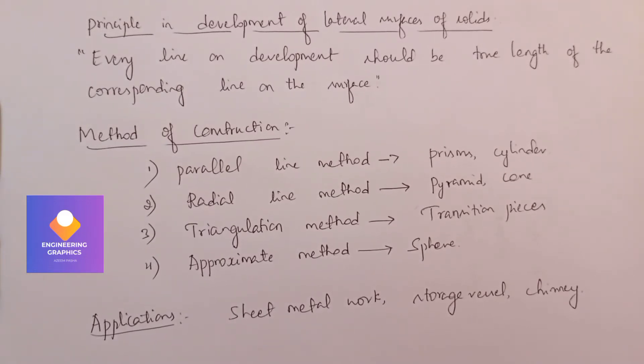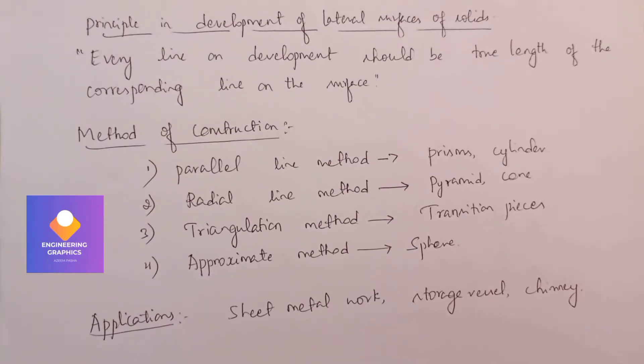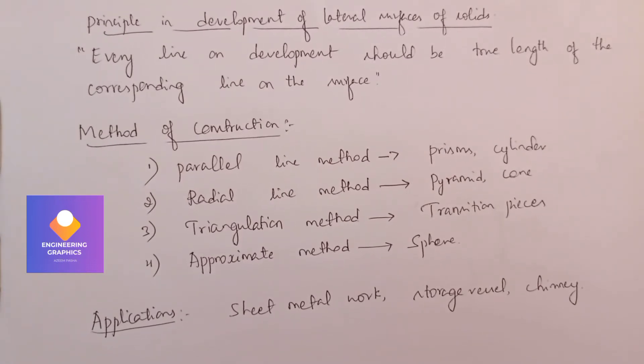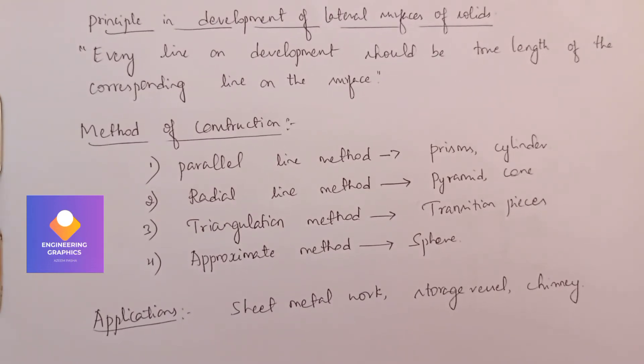True length means the same length of line should be there when we develop it. So every line in development should be the true length of the corresponding line on the surface. Now let's see what are the methods used in construction of the development of lateral surface of solids.